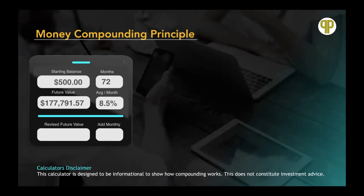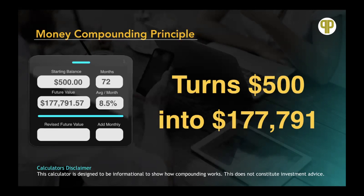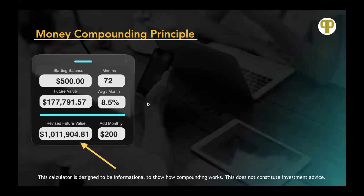Let's talk about the money compounding principle. As you start to make money, you're going to want to get your money growing for you. This calculator is designed to be informational to show how compounding as a principle works — it does not constitute investment advice. So if you have a starting balance of $500 and you're able to compound that at 8.5% per month over 72 months, that would turn into $177,791. That's the power of compounding. But if you were to add $200 a month to that $500 and continue at 8.5% compounded per month over 72 months, just by adding $200 more a month, that grows to over one million dollars.